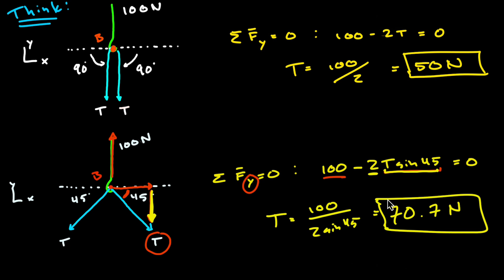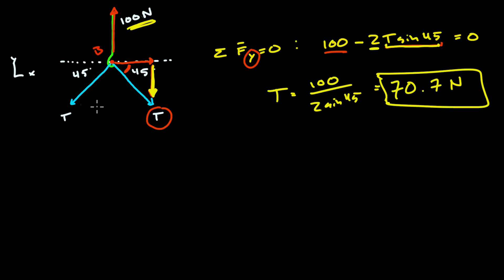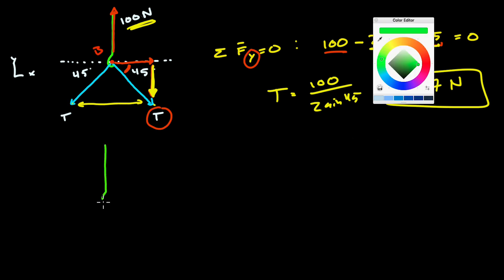So just thinking about this for a second the trend seems to be the more horizontal or the more splayed out these two forces are the larger the tension in the cable has to be to support the same 100 newton force. Now I don't want to go overboard with examples here but let's just take one last extreme case and we can kind of see the effect of what happens as we widen the gap between these two endpoints on this cable and see how it relates to the tension in the cable.